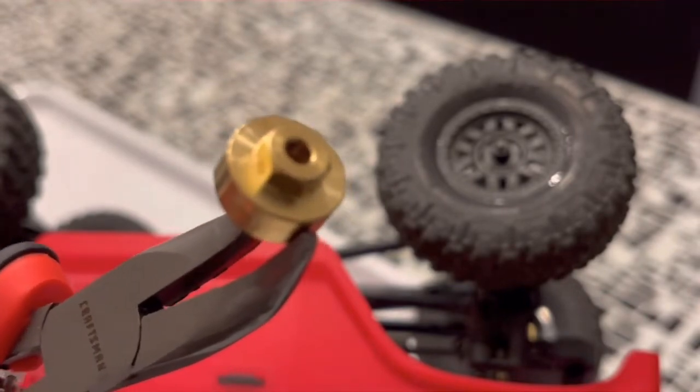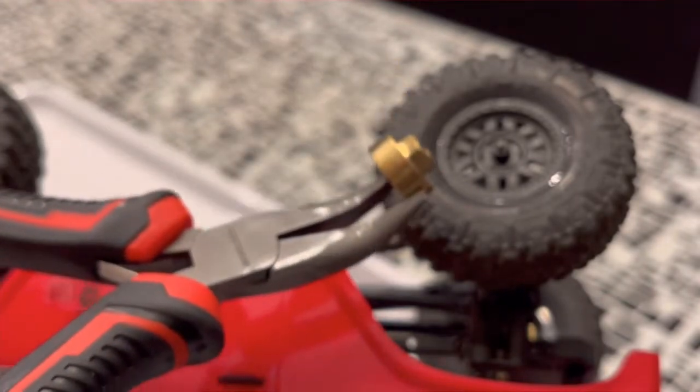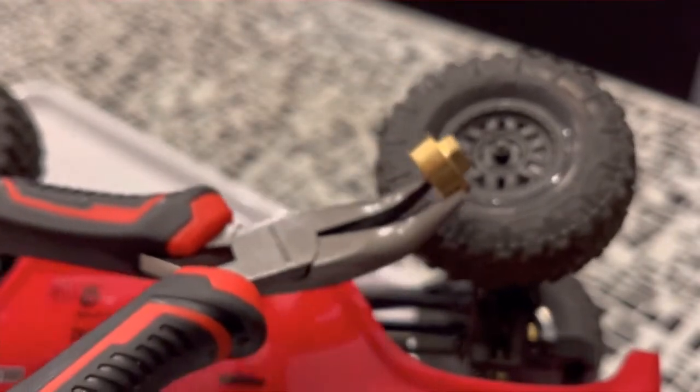Today we're going to install these brass wheel weights on the SCX 24 and they get situated right behind this tire.